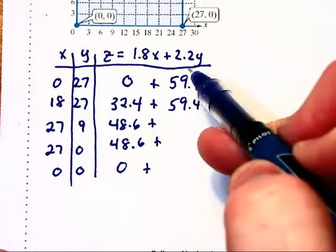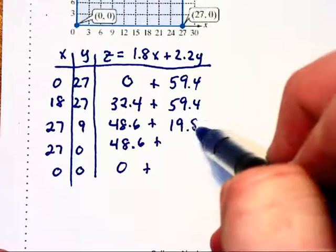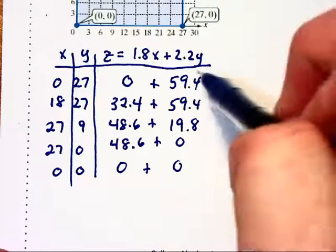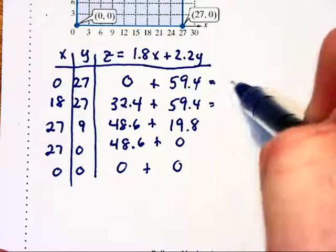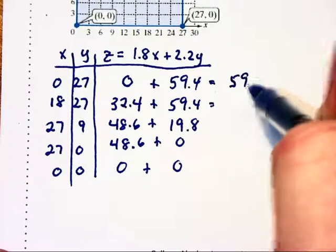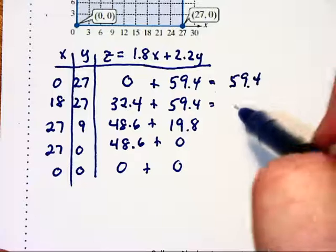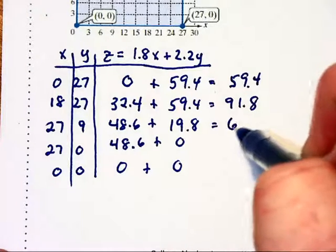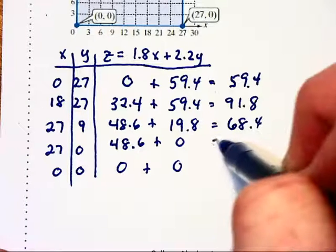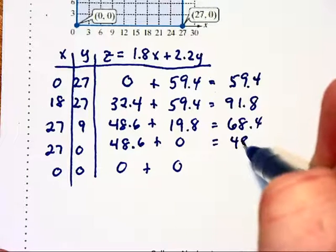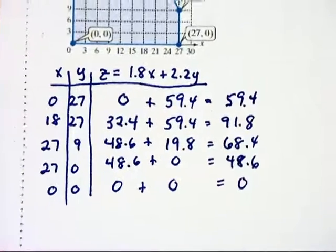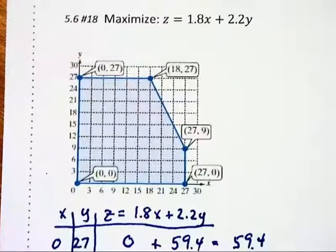9 times 2.2 gives us 19.8, and when we substitute 0 in we get 0. Adding across we have 59.4, 91.8, 68.4, 48.6, and 0. Now this problem said, going back up to the top here, we want to maximize the situation.